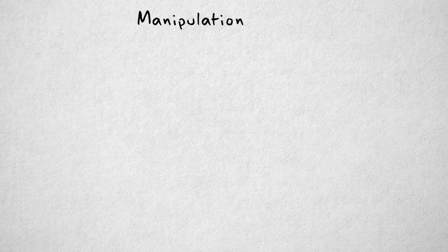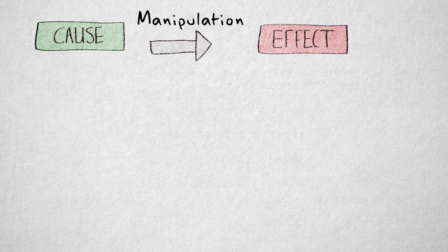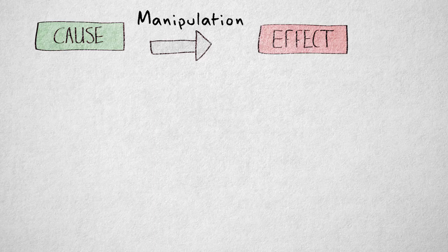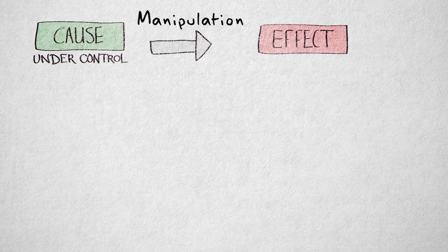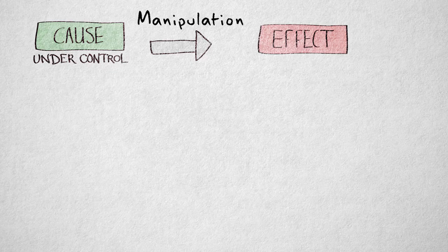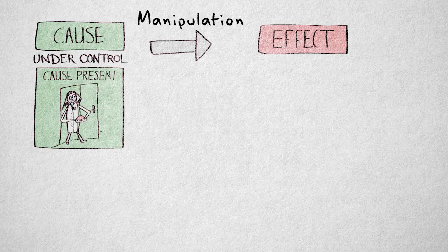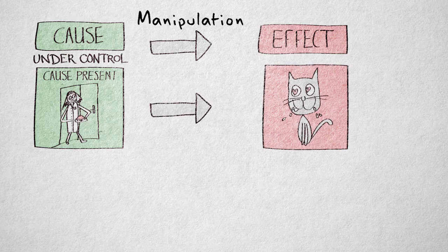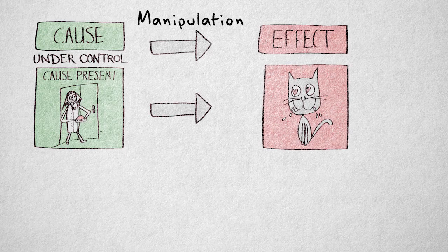Let's start with manipulation. If you want to show a causal relation, the strongest possible empirical demonstration is one where the cause is under your control. If you can create a situation where the cause is present, a causal relation is more plausible, because you can show that it precedes the effect, eliminating ambiguous temporal precedence.